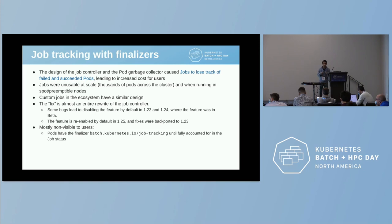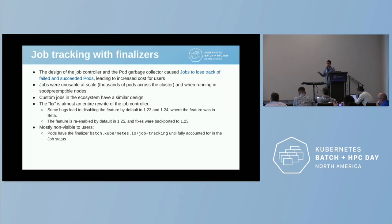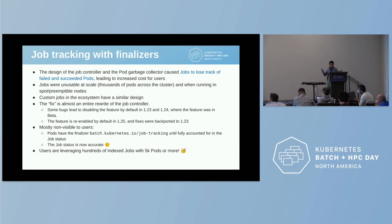In Kubernetes, we don't really re-enable features by default again, but if you need the feature, you can still re-enable it in 1.23 and 1.24 because all the fixes were backported. This is mostly non-visible to users — you don't say 'I want to use job tracking with finalizers,' we just track with finalizers. You will have pods with a finalizer, and your job will finally track progress correctly and not show decreasing counters of completed jobs. We've heard from customers that they are successfully running indexed jobs with 5,000 pods or more, which was not possible before.